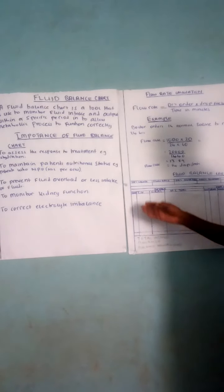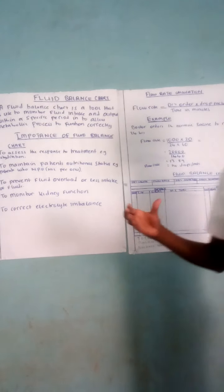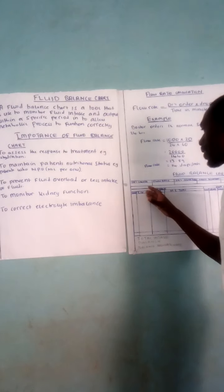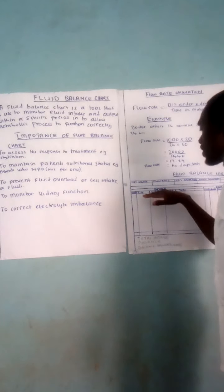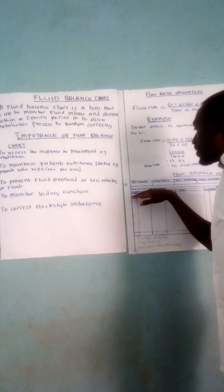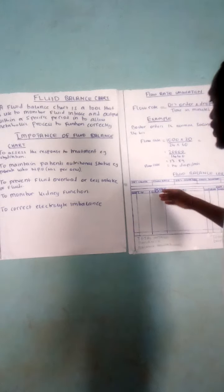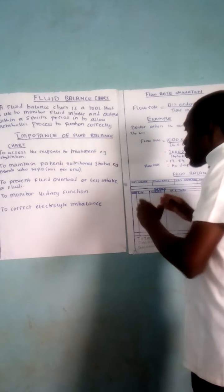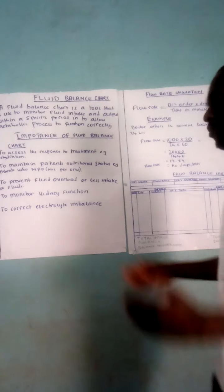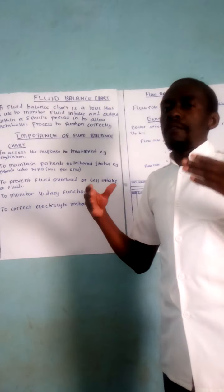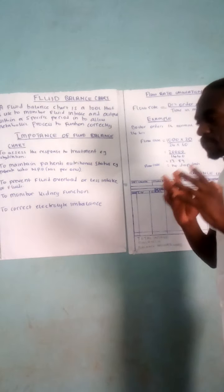On the right part of the fluid balance chart, we have the intake of fluids. There is a column for the time the fluid was administered, a column for intravenous fluid — for example, normal saline commenced at a given time — a column for oral fluids such as ORS with the time indicated, and a column for feeds given via nasogastric tube with the time recorded.